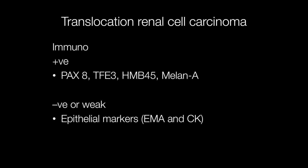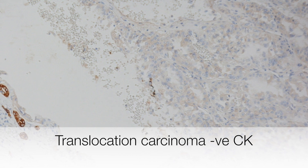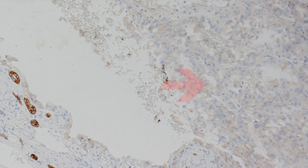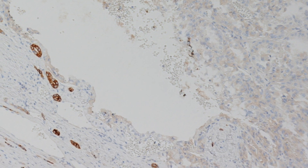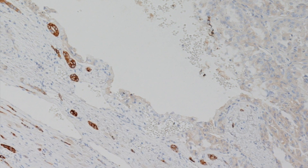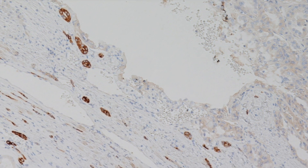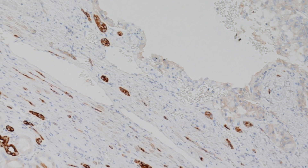The usual immunoprofile for translocation renal cell carcinomas is positive Pax8, positive TFE3, positive HMB45 and melan A, and negative or weak epithelial markers including EMA and cytokeratins. This is the MNF116 cytokeratin stain. The tumour shows very weak or negative staining for cytokeratin, but the residual kidney tubules on the left side of the picture show a strong positivity.